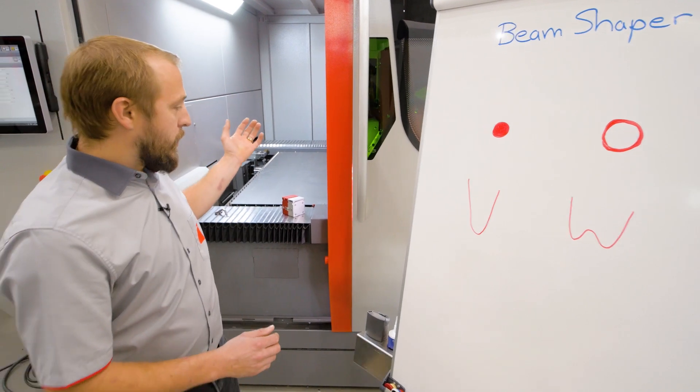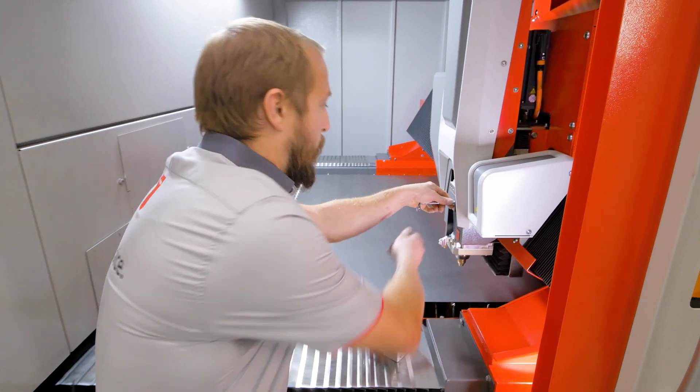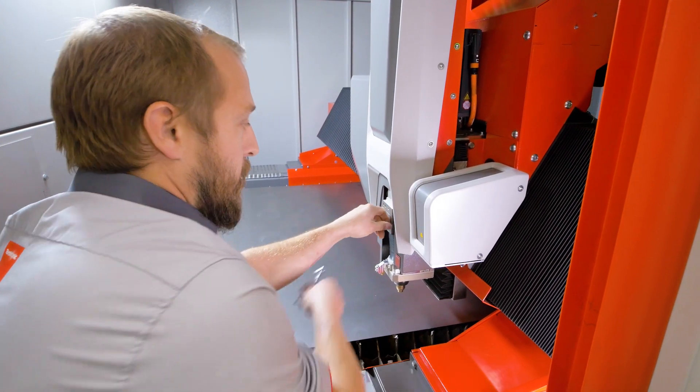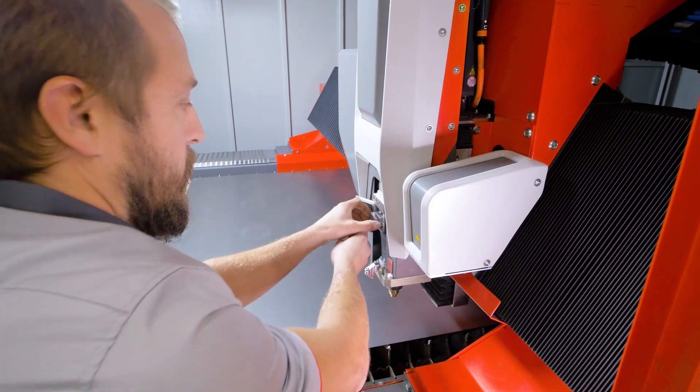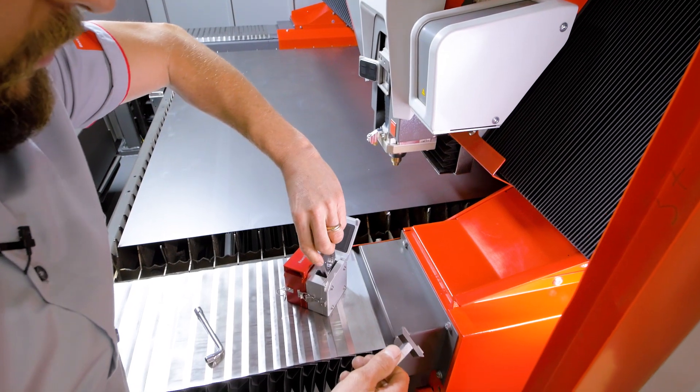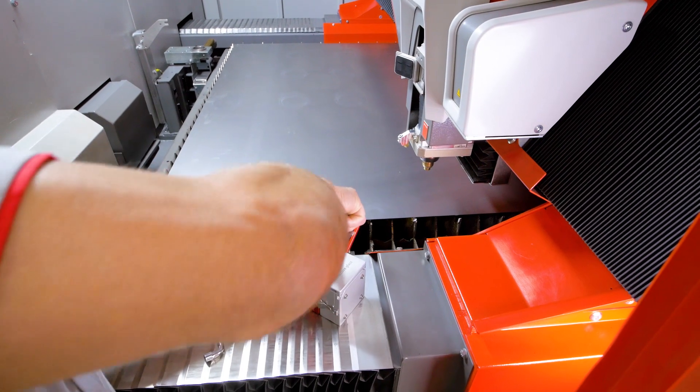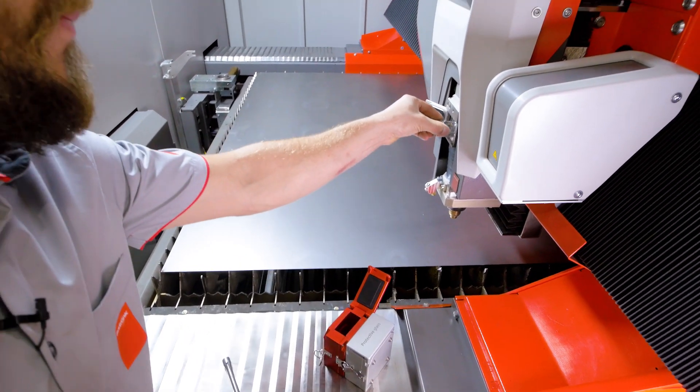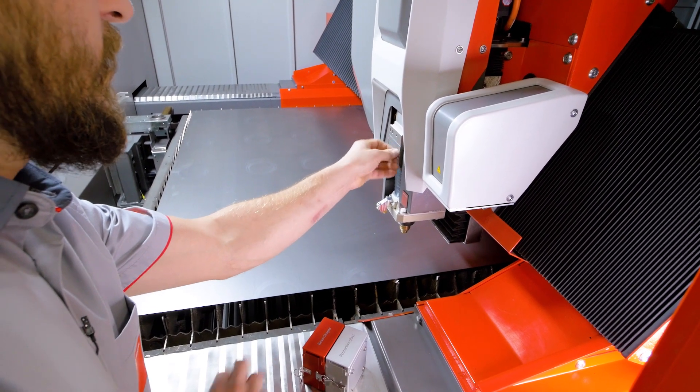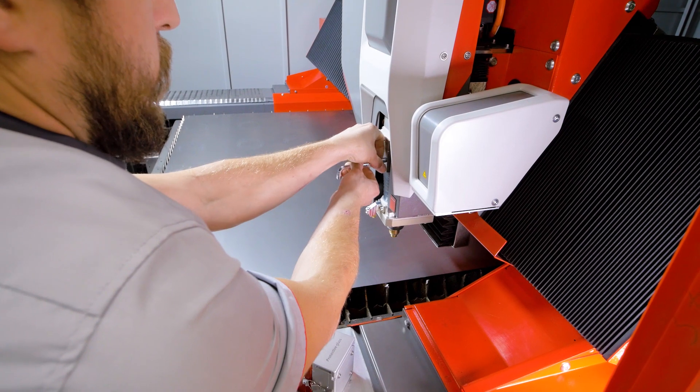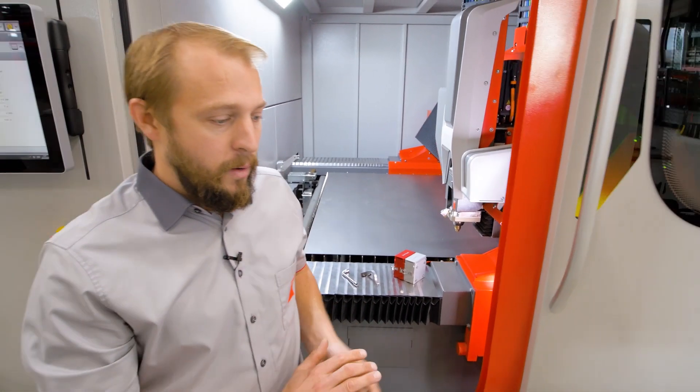Let's have a look inside the machine. We're going to replace our protective glass and add a protective glass with a beam shaper. It's quite easy and fast to do. We just put our protective glass in, take out our beam shaper, insert it in the cutting head, make sure everything is clean and closed, and we are ready for cutting with the beam shaper.